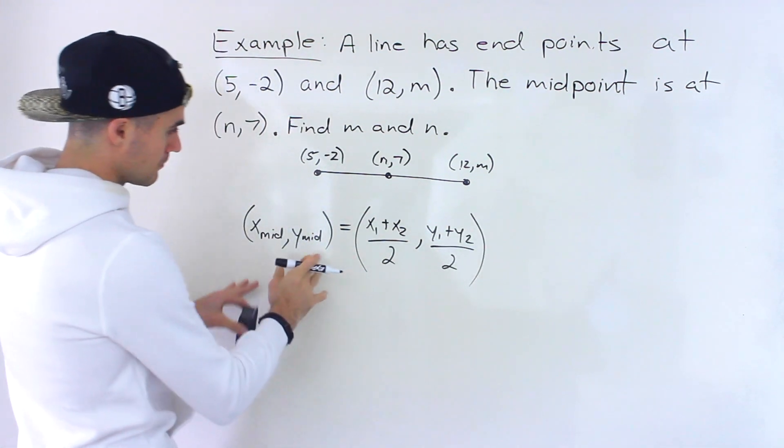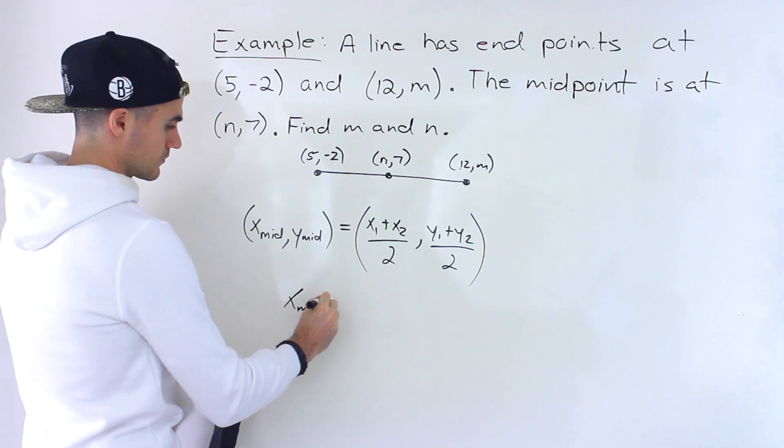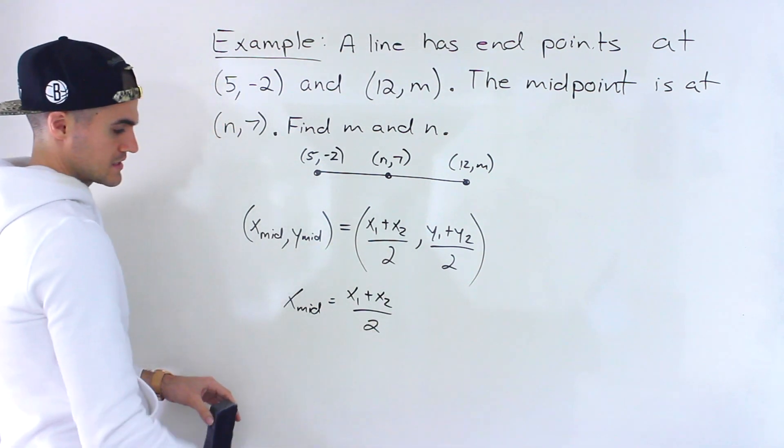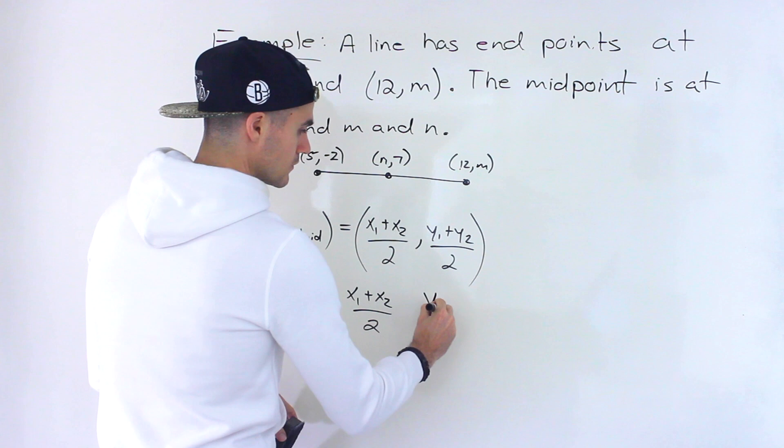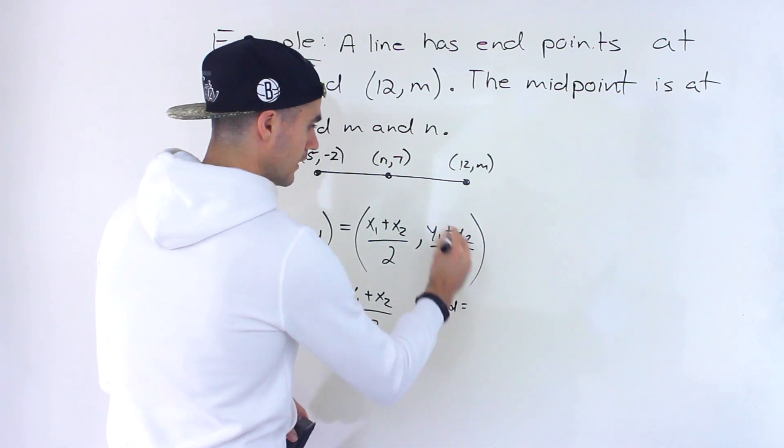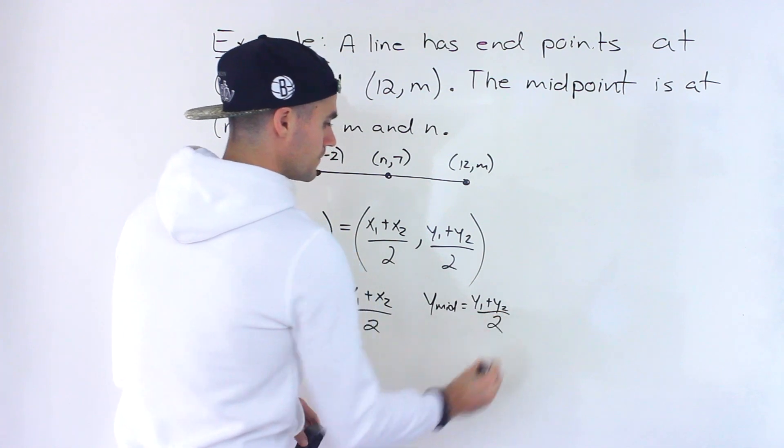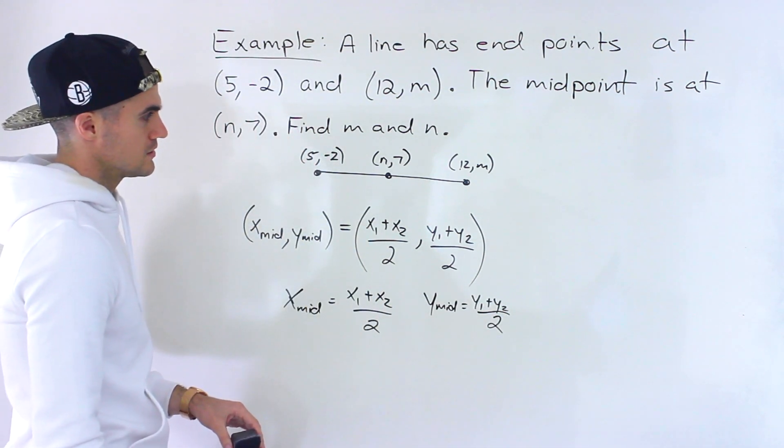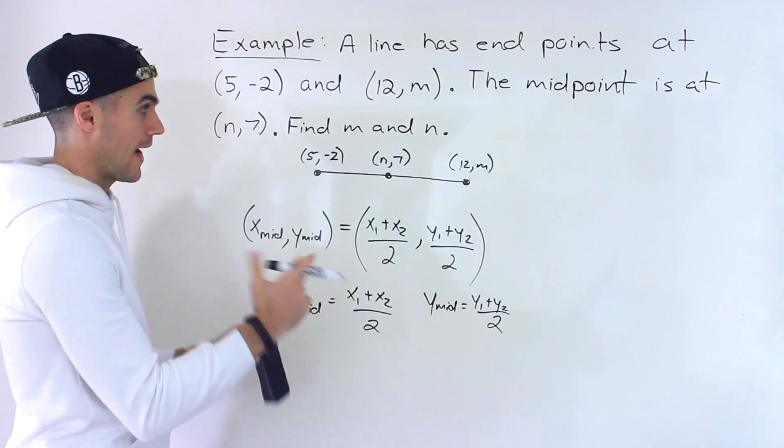And so if we want to make individual equations for both, we could say the x value of the midpoint is this, and then we could say the y value of the midpoint is this part over here. And so from here, what we can do is just sub in everything and then solve for that m and n.